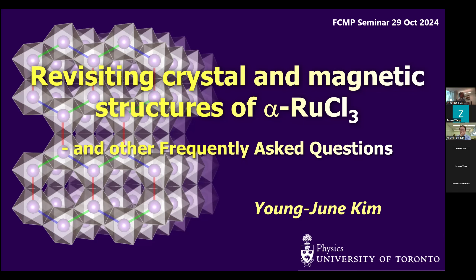Today we're happy to have Yongjin Kim from the University of Toronto give a talk on alpha ruthenium trichloride. Yongjin is actually the first person who did the original measurement on alpha ruthenium trichloride, before the Oak Ridge group did their measurements. The talk title is 'Revisiting Crystal and Magnetic Structures of α-RuCl₃.'